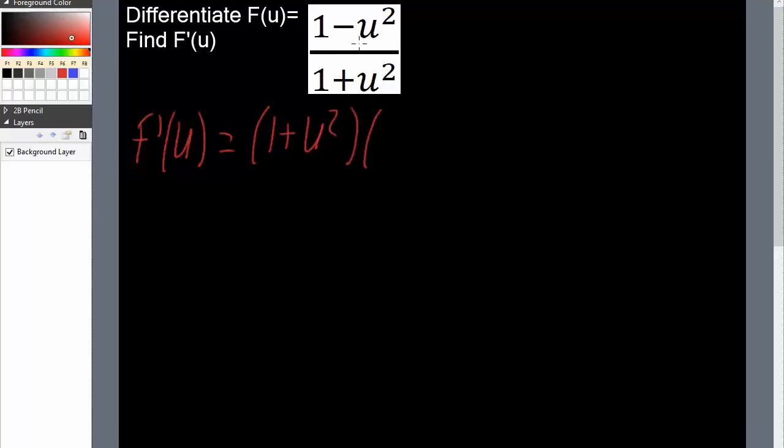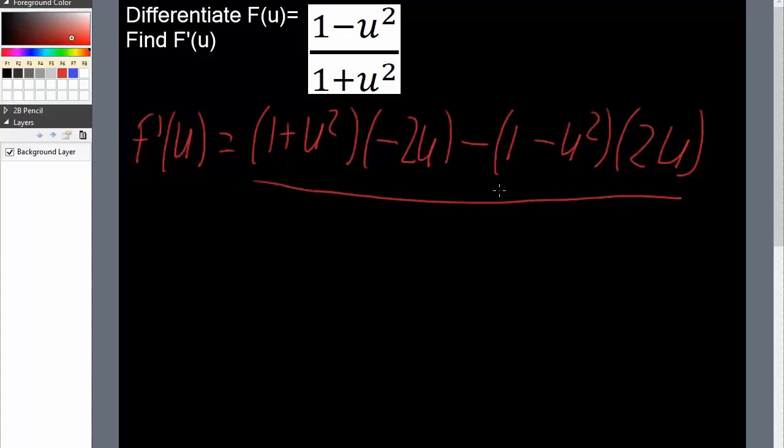Minus the top term, so 1 minus u squared, times the derivative of the bottom term, so 2u. And this whole thing will be divided by the bottom term squared, so 1 plus u squared squared.